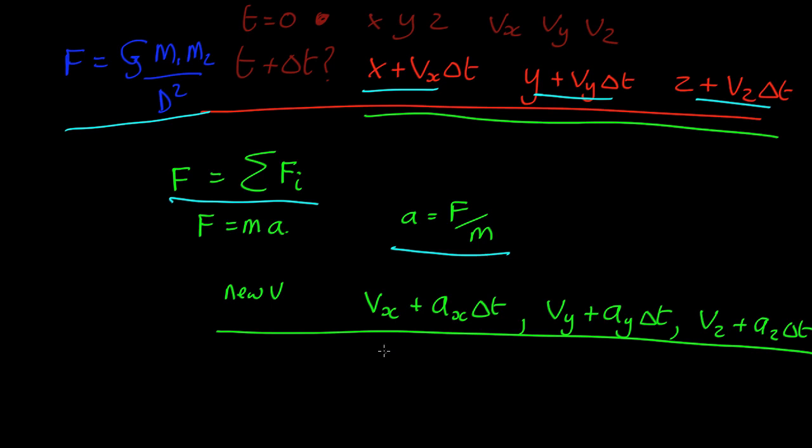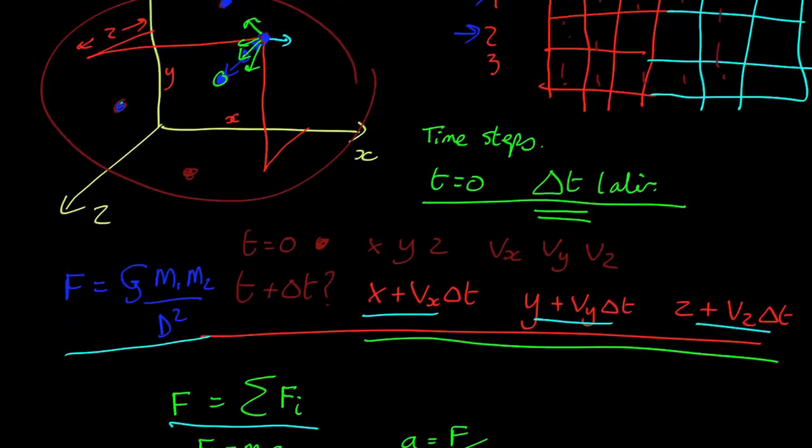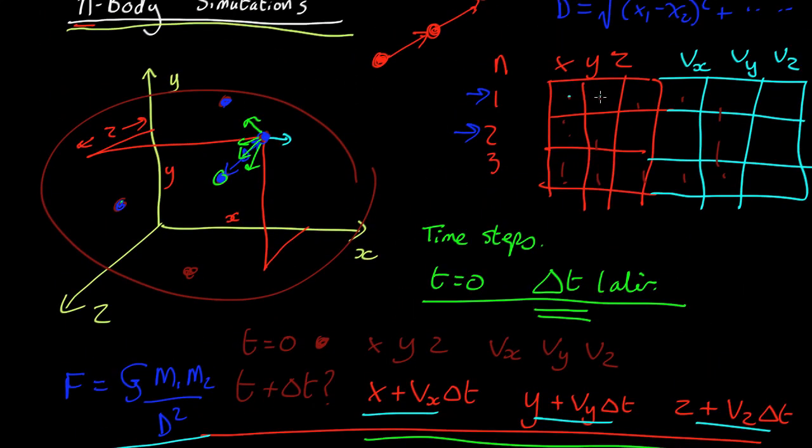And then we update the velocity, so we now have a new position and a new velocity. So back in our computer we start off with the initial positions and velocities, we get new ones.